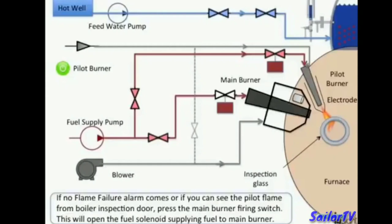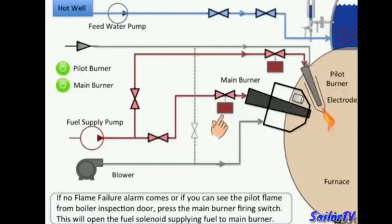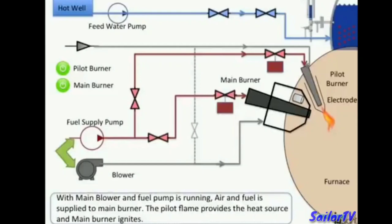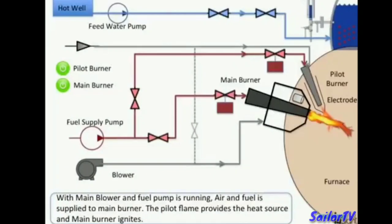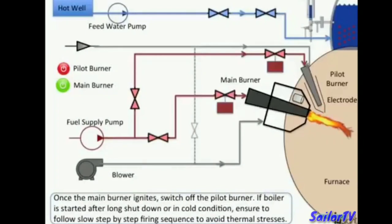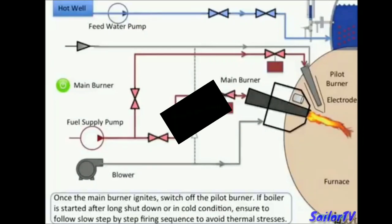If there is no flame failure alarm, you will be able to see the pilot flame from the boiler inspection door. Then press the main burner firing switch — this will open the fuel solenoid supplying fuel to the main burner. With the main blower and fuel pump running, air and fuel are supplied to the main burner, and the pilot flame provides the heat source to ignite it. Once the main burner ignites, switch off the pilot burner. If the boiler is started after a long shutdown or in cold condition, always follow a slow, step-by-step firing sequence to avoid thermal stress.